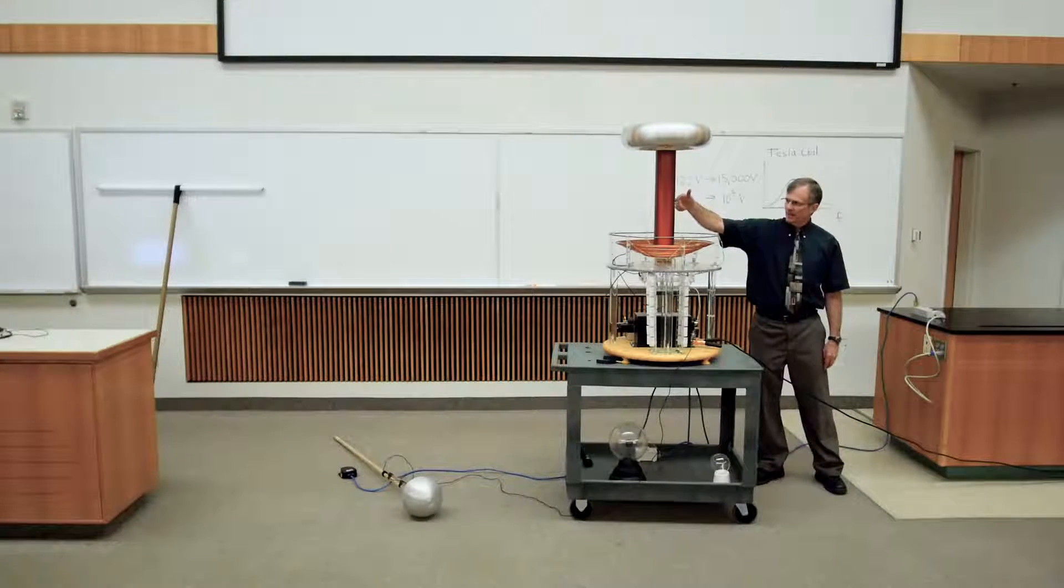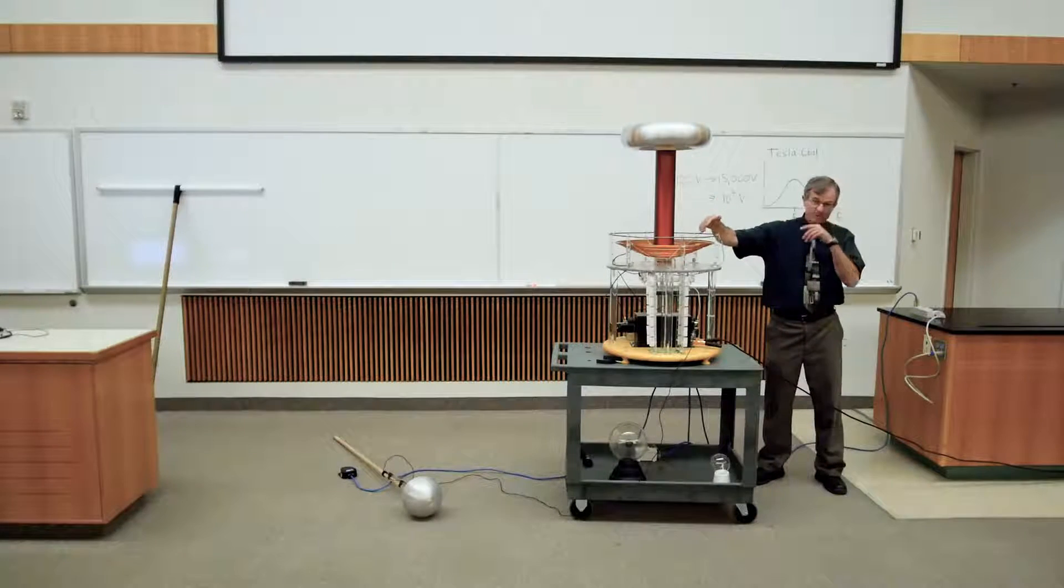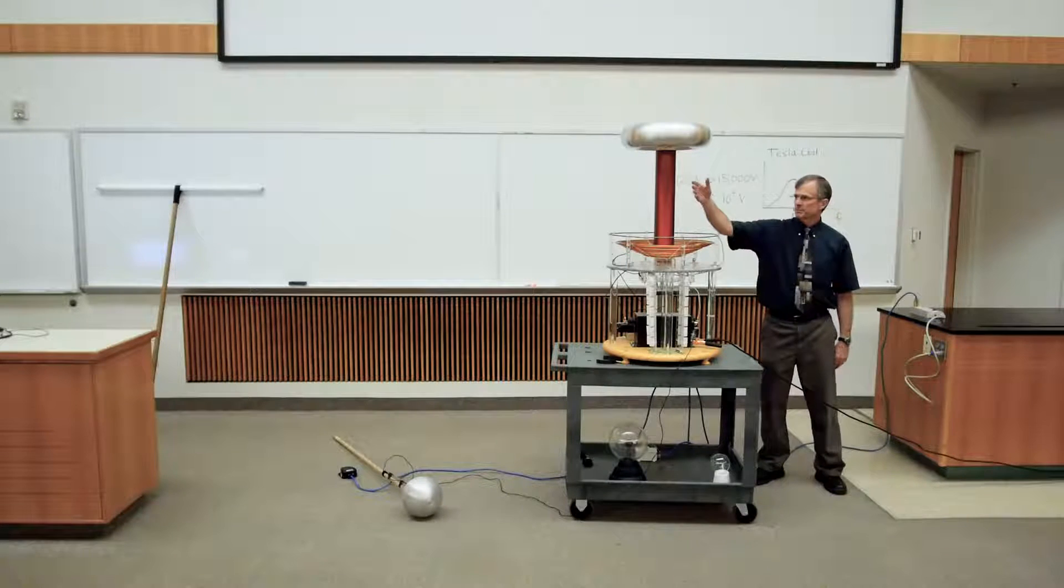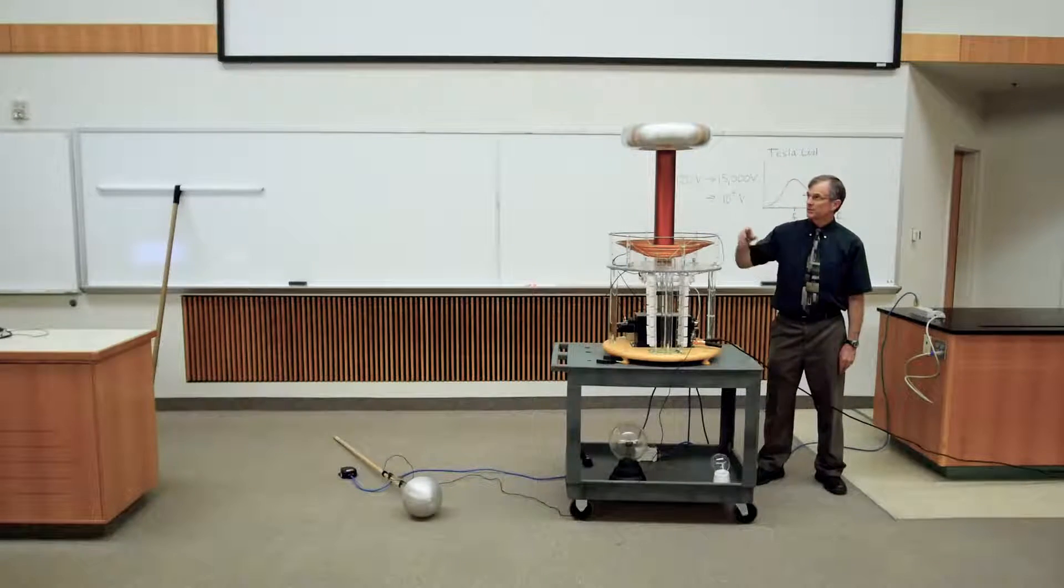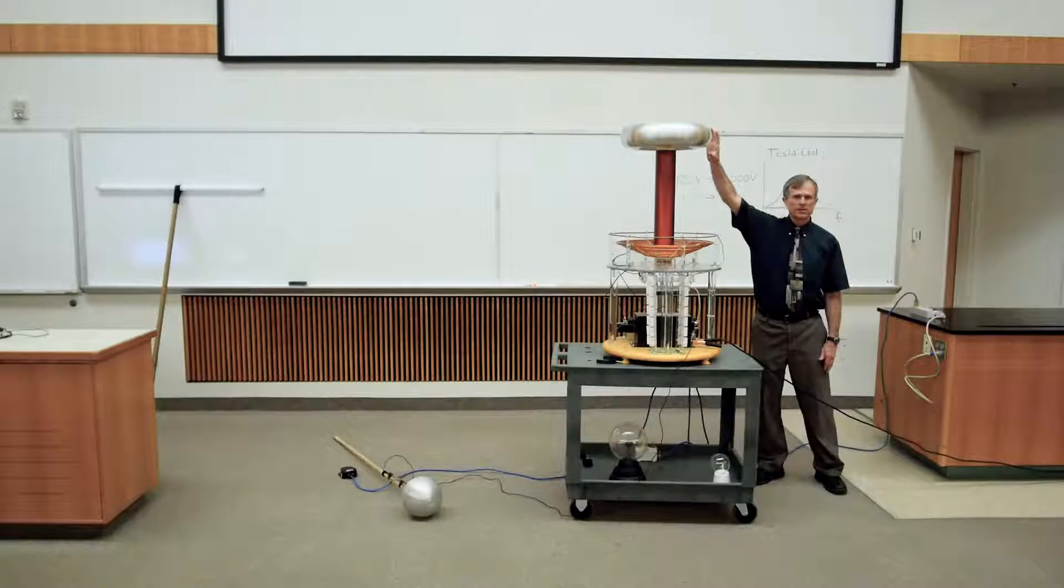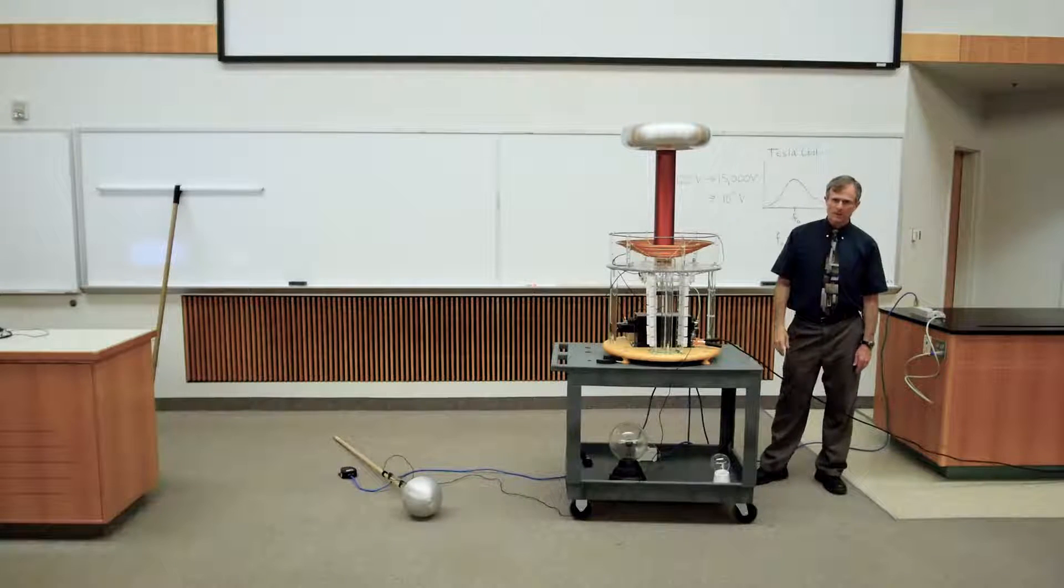And this guy, and this guy serve as a second transformer that transforms from about 15,000 volts up to about a million volts. Again, stepping up the voltage. And then we'll have a discharge of electricity from this top silver colored donut.